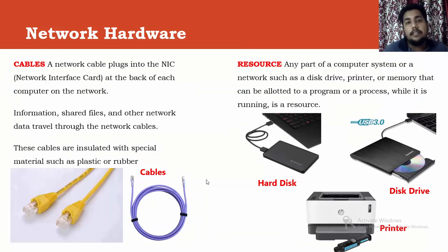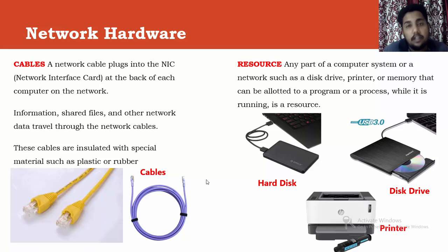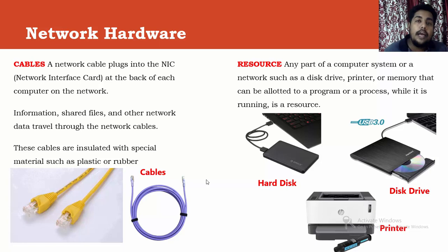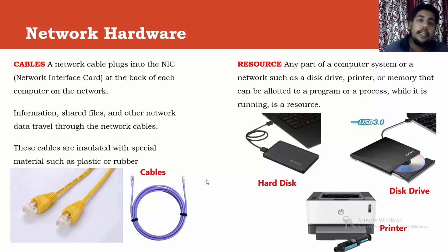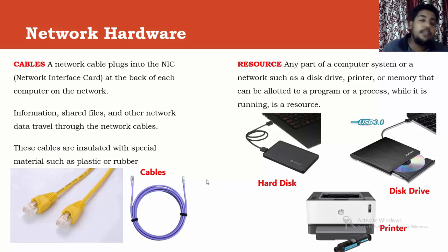A cable is a medium through which information travels from one part to another. Cables are insulated with a special material such as plastic or rubber. As for resources — for example, instead of having many printers for 100 computers, we attach one printer so that whenever a user wants to print something, they can use that one shared printer. Similarly, a CD drive can be shared so all computers can copy CD content from one drive.